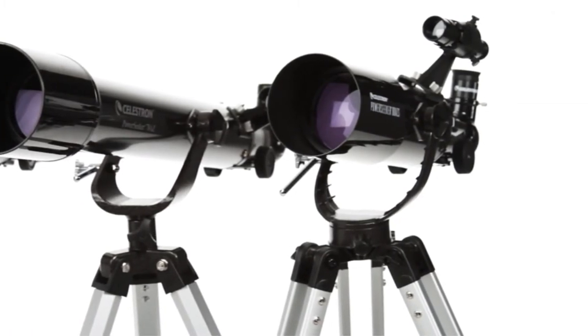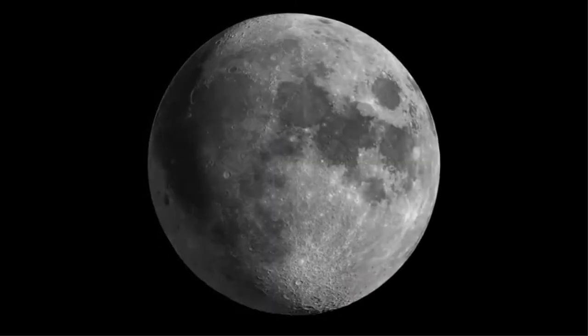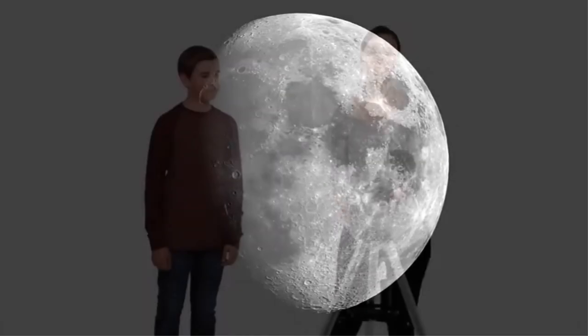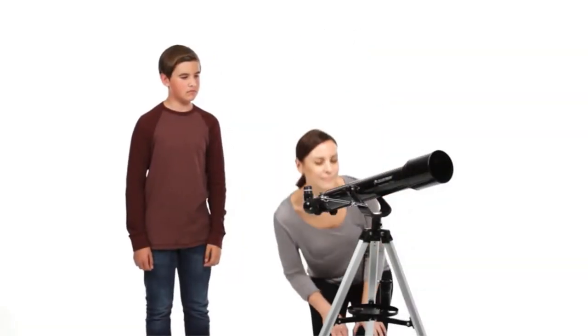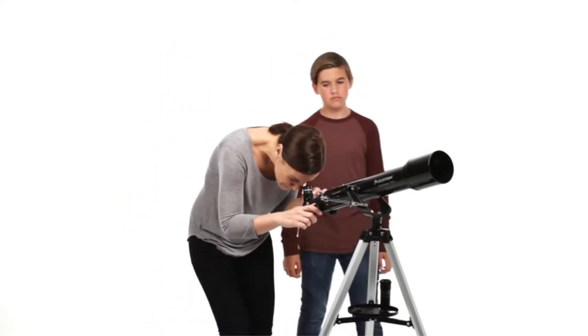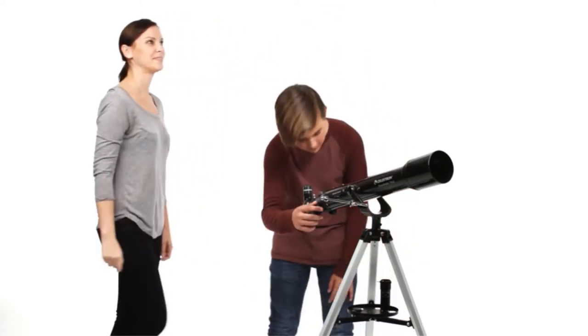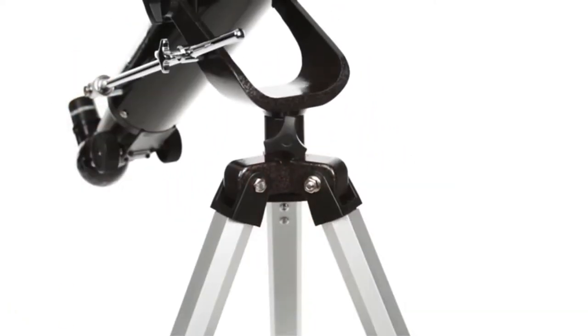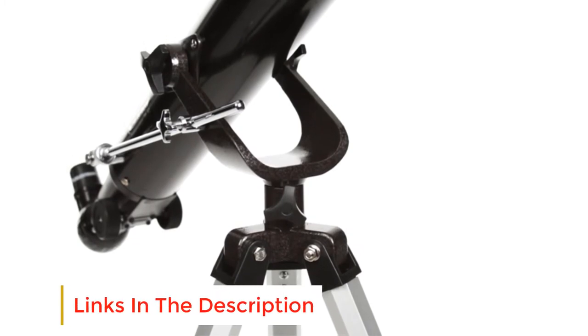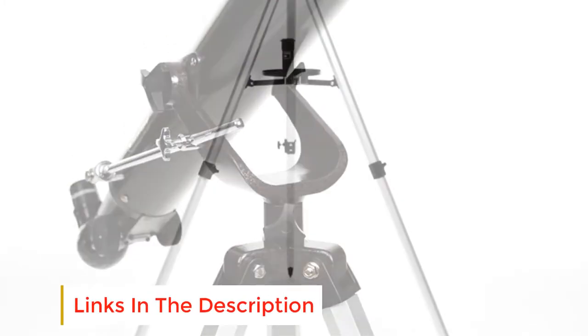The scope has a German equatorial mount featuring a slow-motion altitude rod that delivers accurate and smooth pointing. The scope features a cross knob which can be tightened to adjust the position of the altitude rod. The scope has two eyepieces of 4mm and 20mm and a 3x Barlow lens that triples the power of each eyepiece. The Celestron PowerSeeker 70 is an easy to use and powerful telescope.